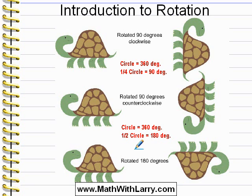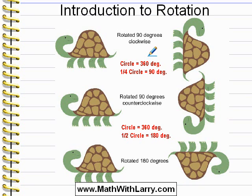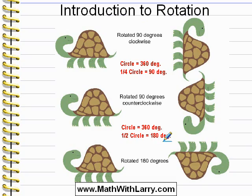This is just a very basic introduction. Make sure that you remember that a circle is defined as having 360 degrees. Make sure that you feel fully comfortable with the concept of clockwise and counterclockwise. And make sure that you see how quarter rotations are 90 degrees and half circle rotations are 180 degrees. We'll come back to this more in later lessons.